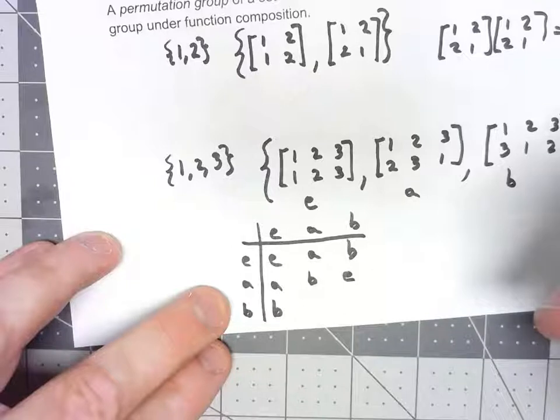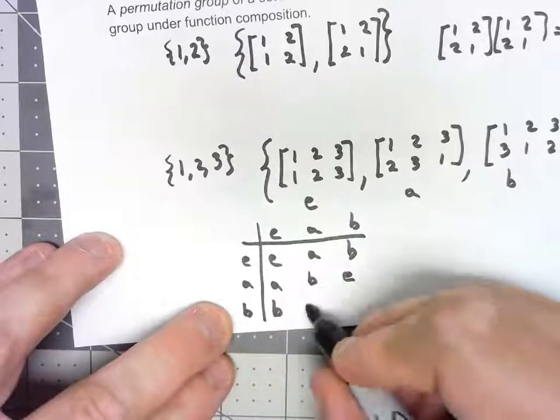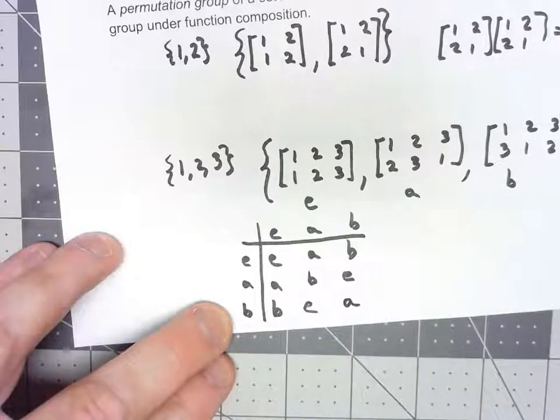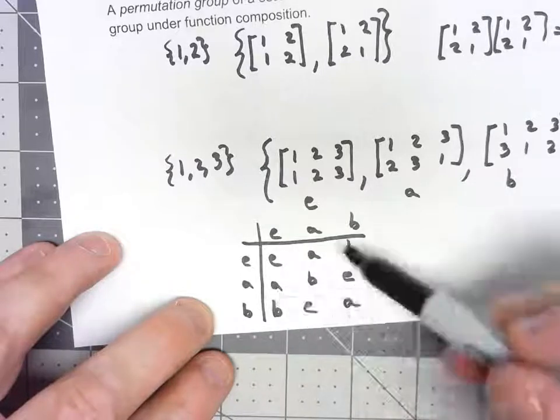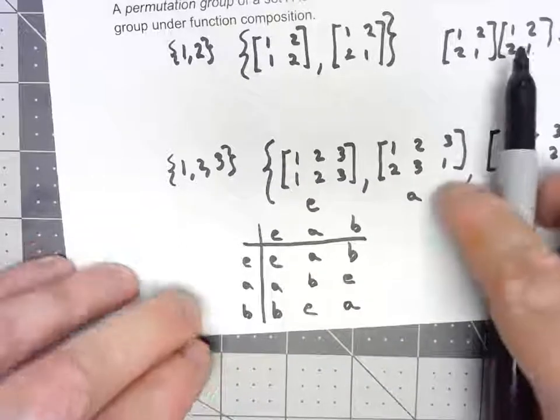Now, you should be able to figure out the rest here, but B times A is going to be the identity, B times B is going to give me A. And then once we've got that, it's easy to see. We've got inverses, it's a closed operation, so it will be a group.